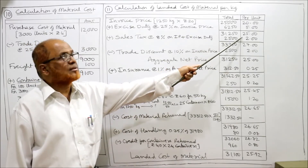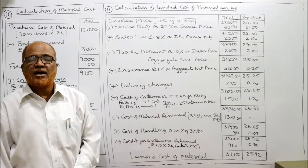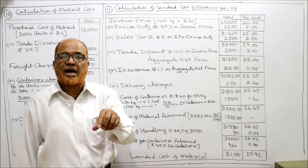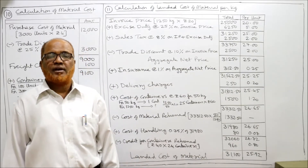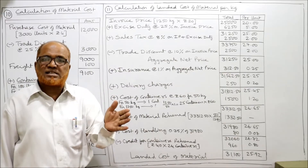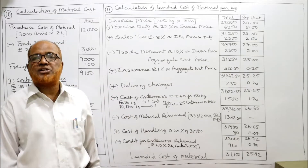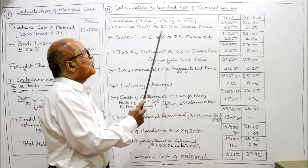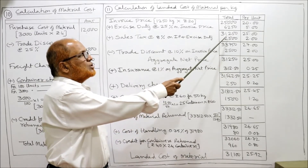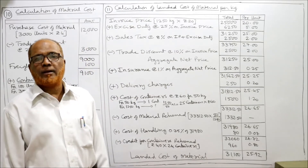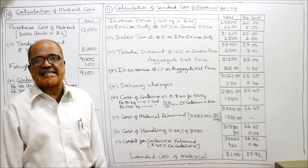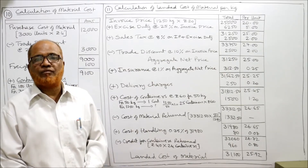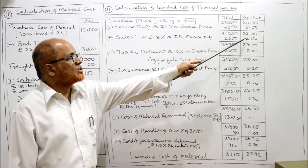Now taking sales tax: it is 8% of invoice price plus excise duty. The total of invoice price plus excise duty is 31,250, so 8% of 31,250 = 2,500 rupees. Per kilogram: 2,500 ÷ 1250 = 2 rupees per kilogram.